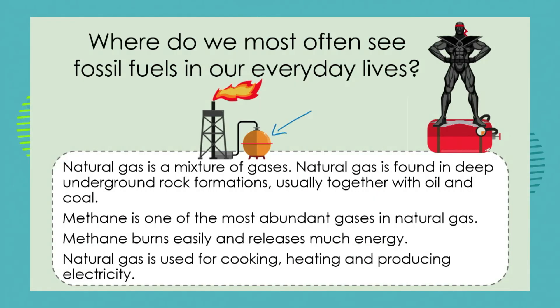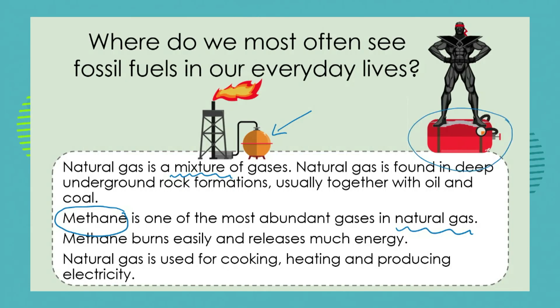What about natural gas? Natural gas is actually a mixture of gases and it's found deep in underground rock formations. Usually if there's natural gas, we'll find oil or coal as well. One of the most important gases in this mixture is methane — it's one of the most abundant gases in natural gas. Methane burns easily and releases much energy. If your home or school is powered by gas, you'll see big gas bottles that pipe gas in, and you can use it for cooking, for heating, or even for producing energy.